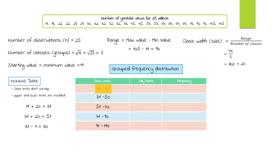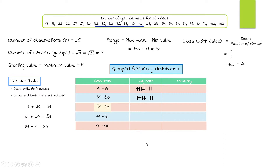Now doing the tally marks: within 11 through 30, we count 1, 2, 3, 4, 5, 6, 7 — so 7 marks. For 31 through 50, also 7 observations. For 51 through 70, we have 6 observations. For 71 through 90, there are 3 observations. For 91 through 110, we have 2 observations.